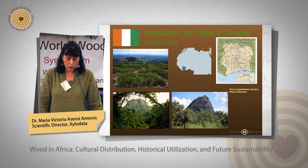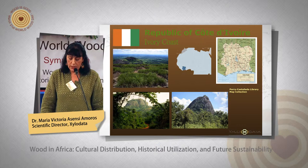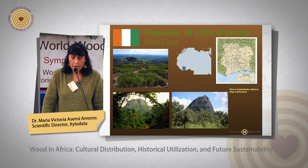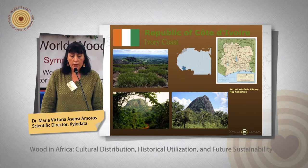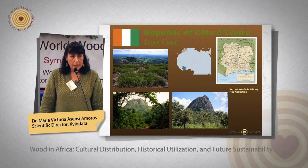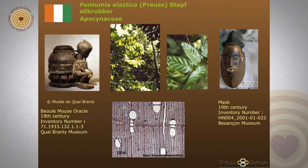Prior to colonization by Europeans, Ivory Coast was home to several states, including Gyaaman, the Kong Empire and Baule. Ivory Coast is formed by a large plateau rising gradually from sea level in the south. The southern region, especially the southwest, is covered by dense tropical moist forest. The Baule create art in several different media, including gold and brass casting, wooden sculptures, masks and figures. These two objects are made of Funtumia elastica, a medium-sized tree. It is a species of dense evergreen forest which also grows in the coastal zone. The tree is especially known for its medicinal properties. The wood, creamy and light, is mostly used in local carpentry.